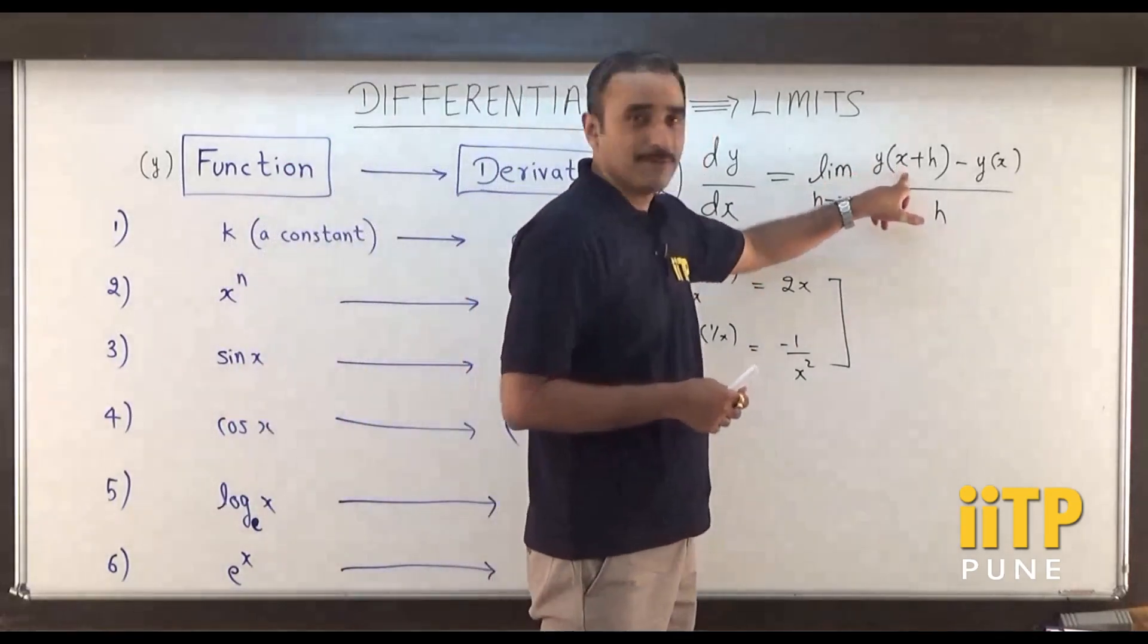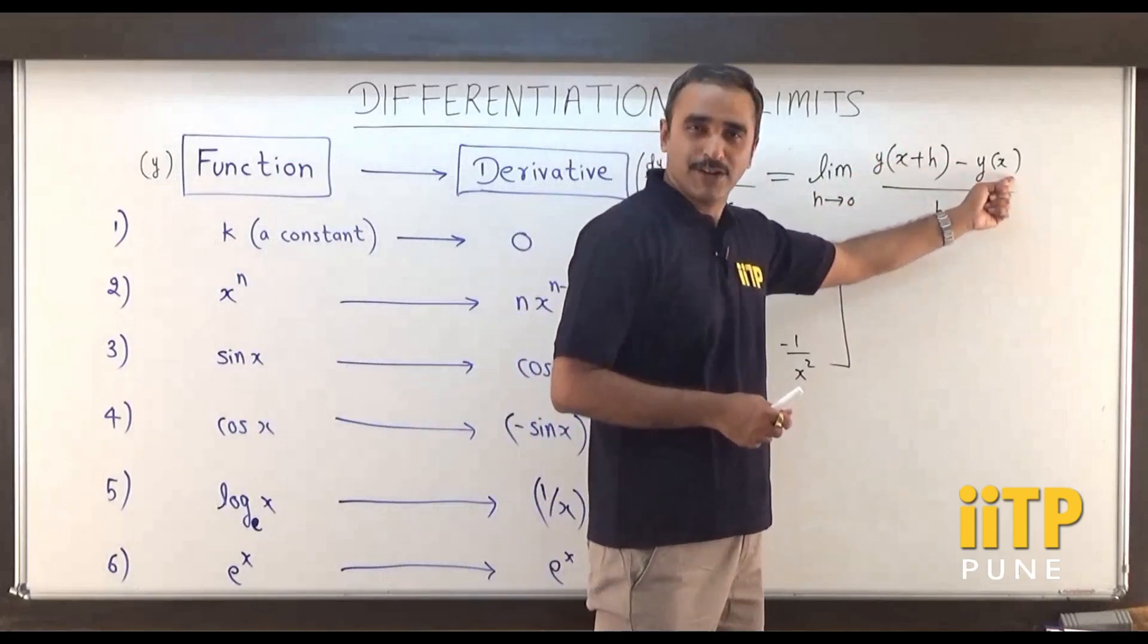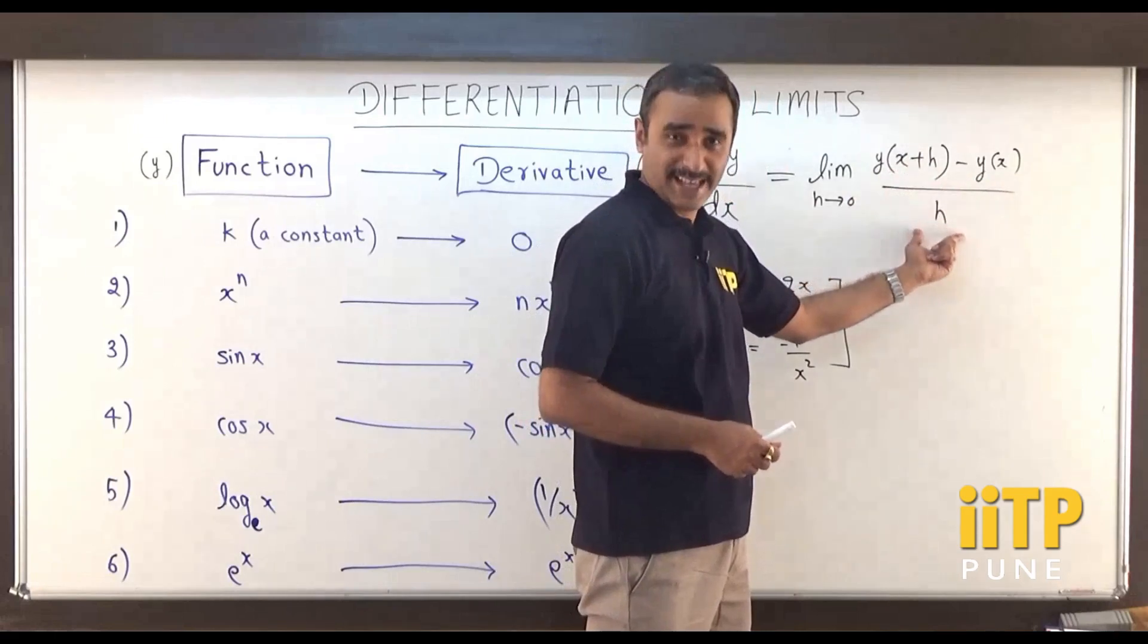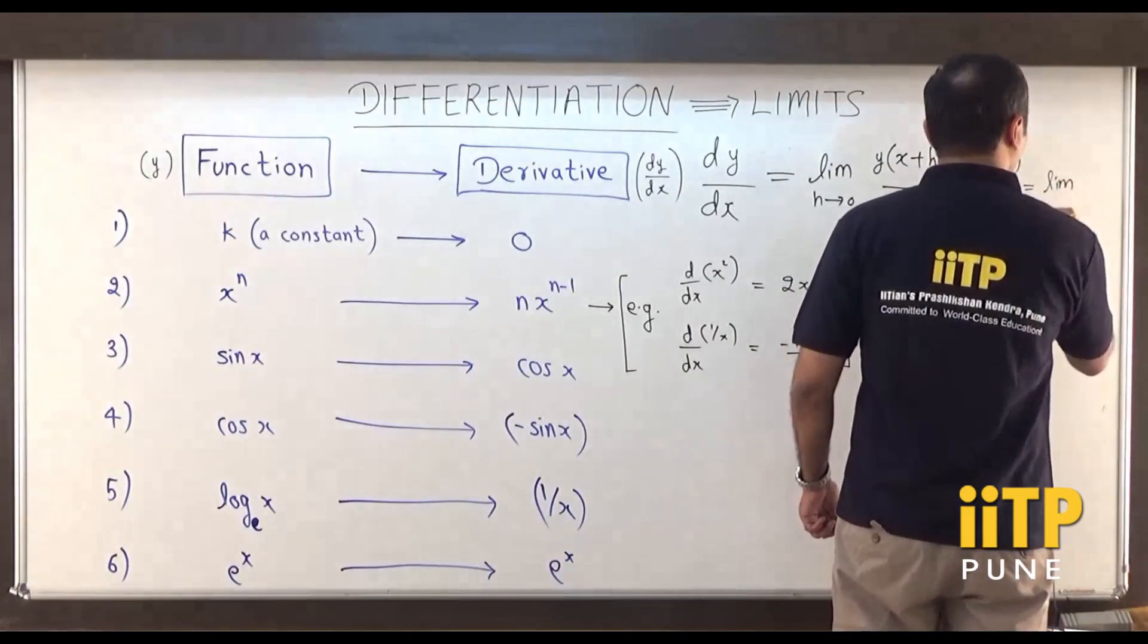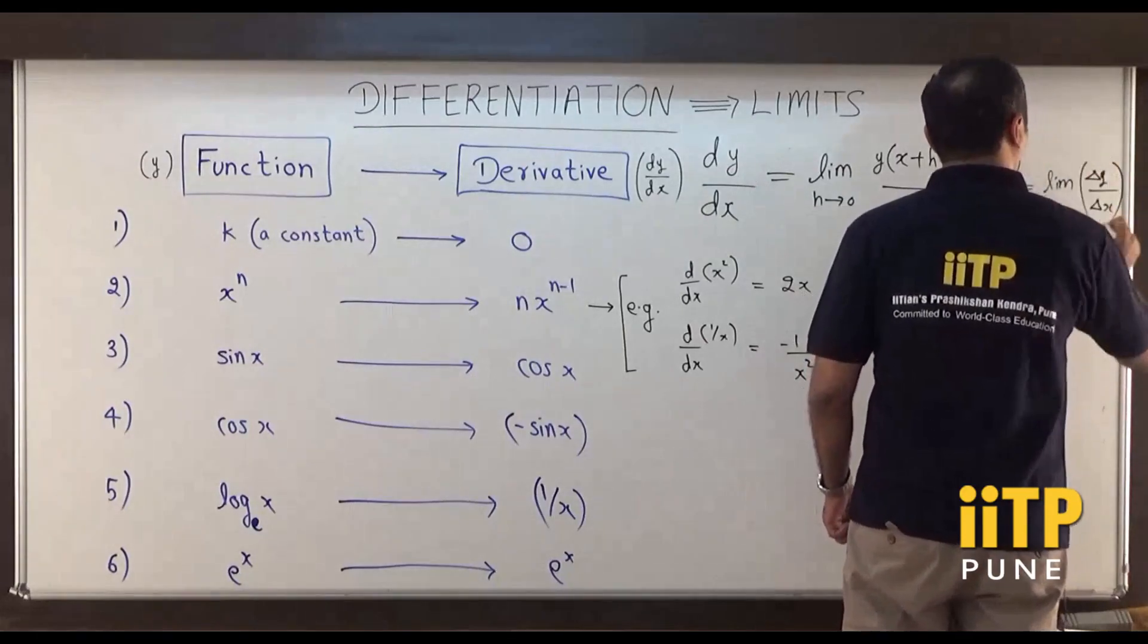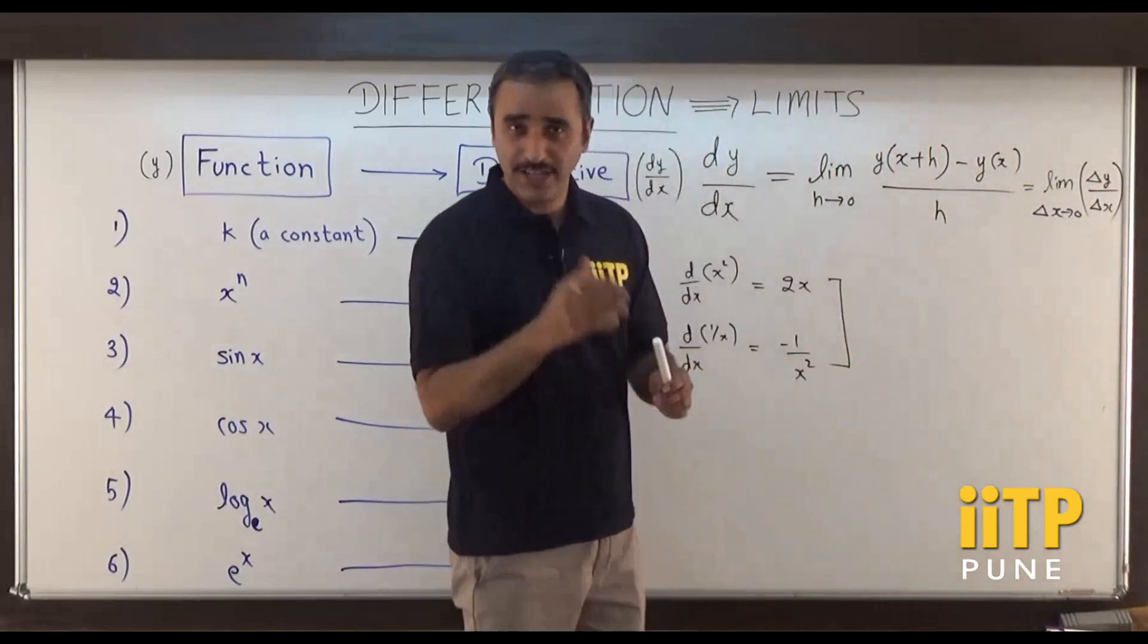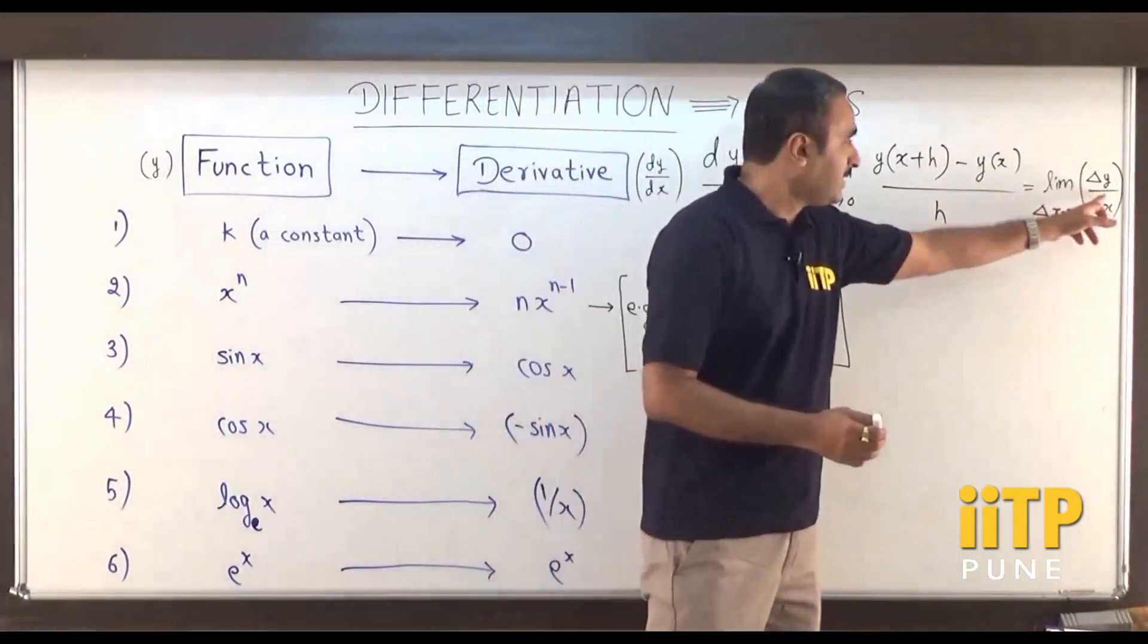What we do is, we find the value of the function at some point x plus h, subtract it from the value of the function at x, and we make h as small as possible. This ratio of the difference of y with respect to the difference in x. Essentially what it is? It is essentially limit of Δx tends to 0, Δy by Δx. Change in y or change in the value of the function with respect to change in the value of the independent variable or x. That is what is denoted by this.